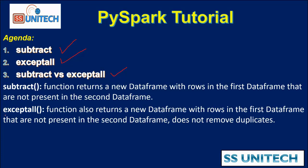Next is exceptAll. The exceptAll function also returns a new dataframe with the rows from the first dataframe that are not present in the second dataframe. However, it does not remove duplicates. So if any row has a duplicate in the first dataframe, it will return both rows. But in the case of subtract, it will return only a single row. So we can say subtract is exceptAll plus distinct.